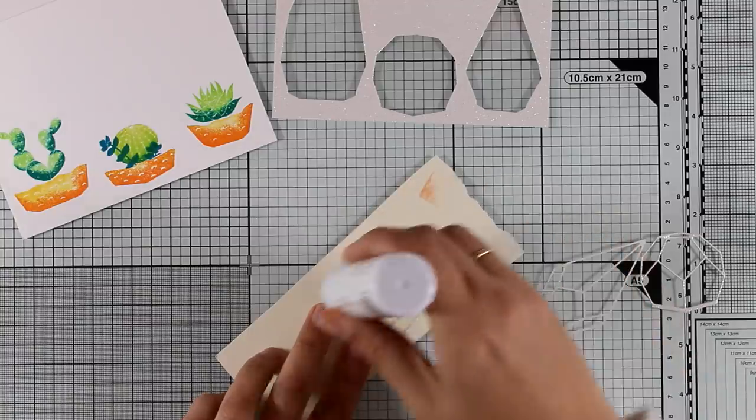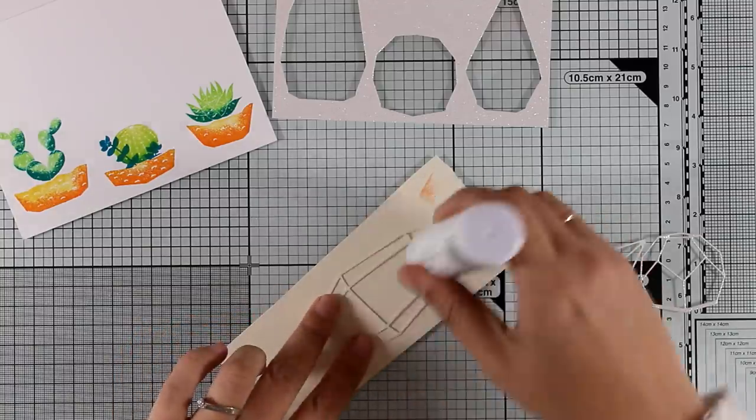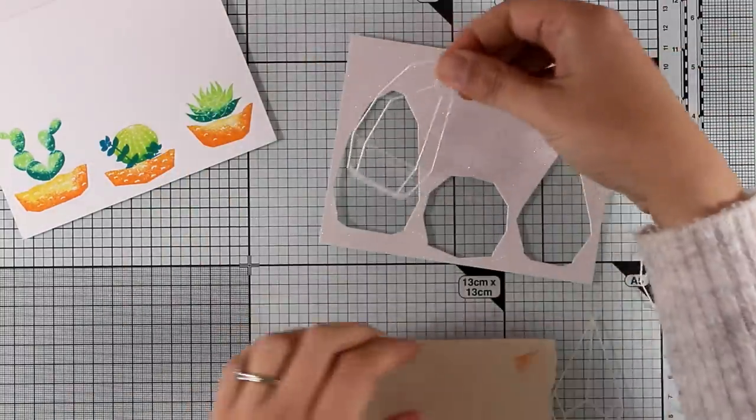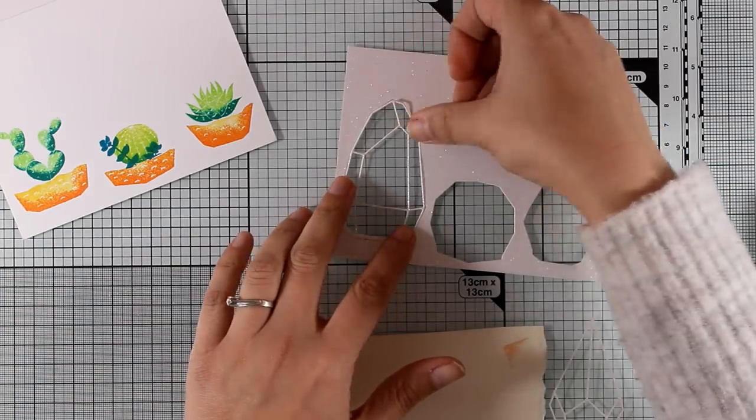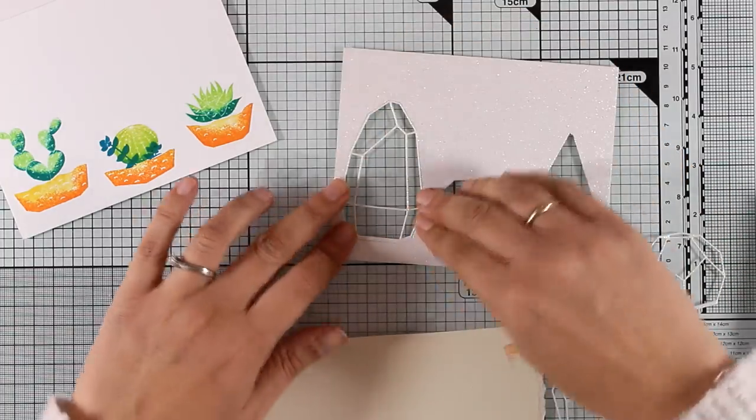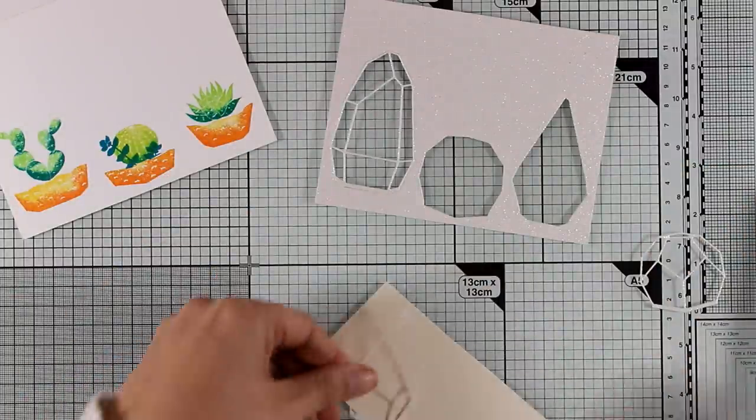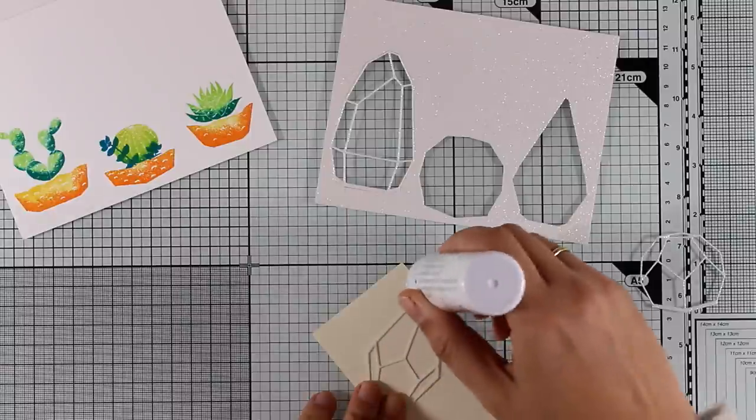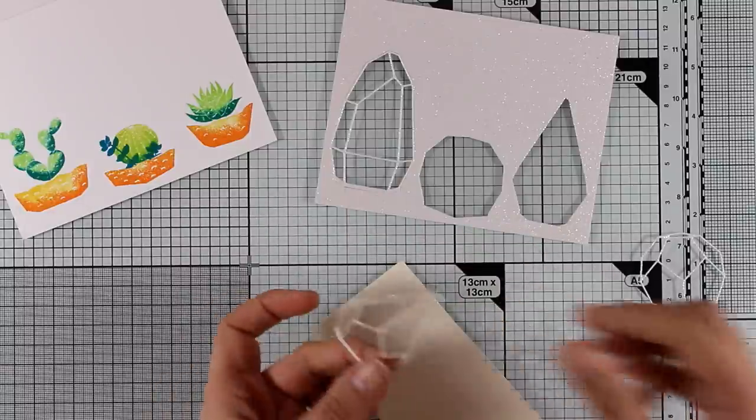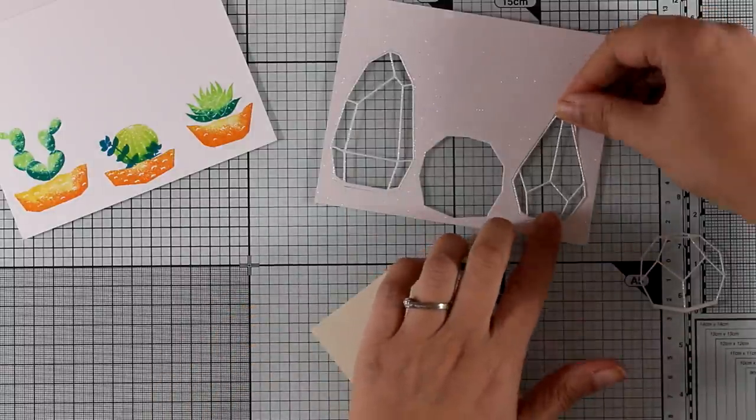Now I need to stick all those terrarium frames on top of those windows. For that I'm using my Nuvo glue pen, and this is the one with the wider tip. I find that this is the easiest way to apply adhesive at the back of such delicate cutouts, and you see that they pop right inside those windows.